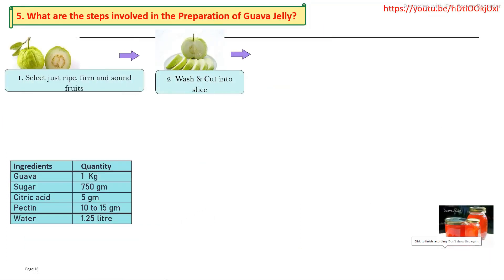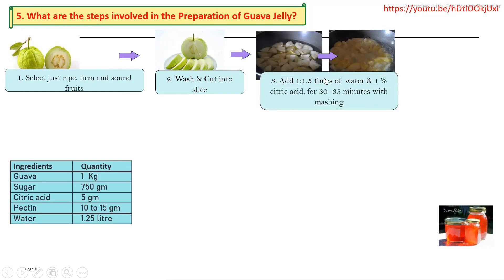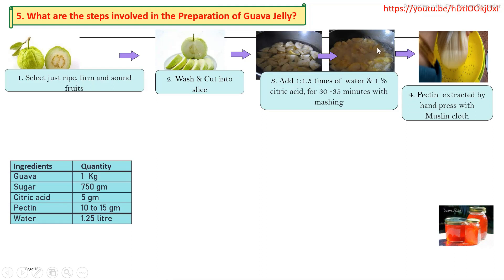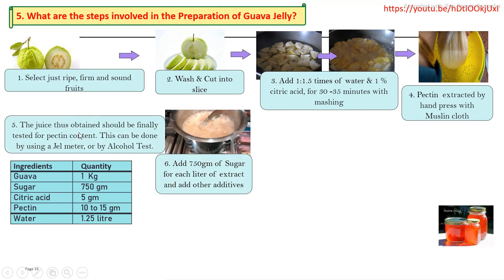For the guava jelly manufacturing process: properly ripe fruits are selected, then cutting is carried out. For pectin extraction, water is added and cooking is done for half an hour, with citric acid added during cooking to extract pectin. The extract is then separated using muslin cloth by pressing.